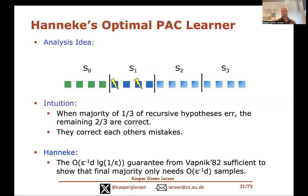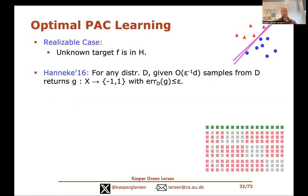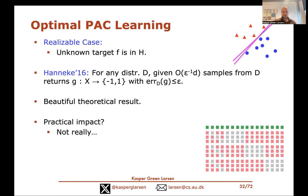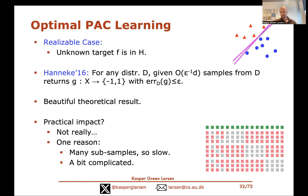This is Hanneke's result: in the realizable case, with d/ε samples you can achieve error at most ε. It's a beautiful theoretical result, though it had limited practical impact — partly because the algorithm generates quite many subsamples. With three recursive calls on datasets of size m/4, the recursion depth is log base 4 of m, and the total number of subsamples is 3^(log_4 m) ≈ m^0.79. Each subsample has size at least half the training data, so the running time blows up by a factor of roughly m^0.79.